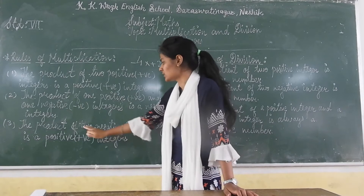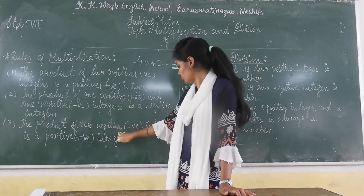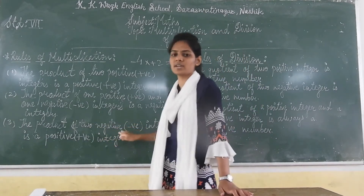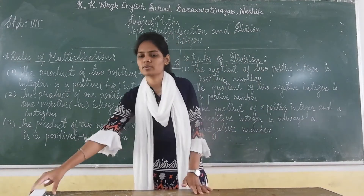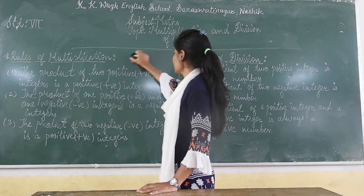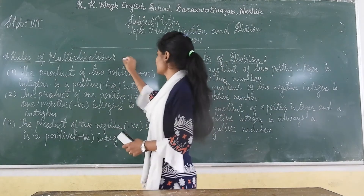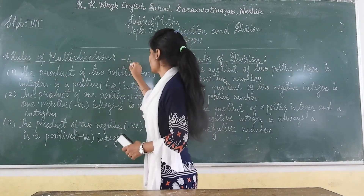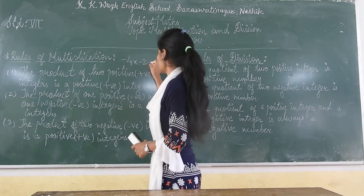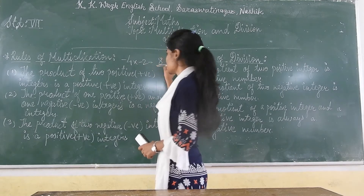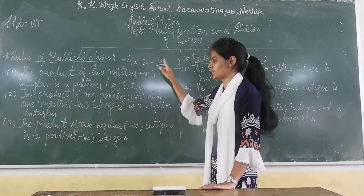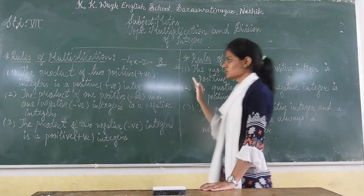The third rule says that the product of two negative integers is always positive. For example, if we are multiplying minus 4 into minus 2, our answer will be 8, that is it will be a positive number.